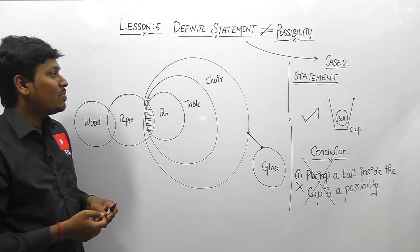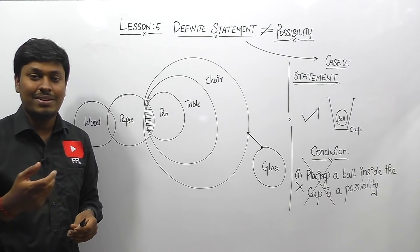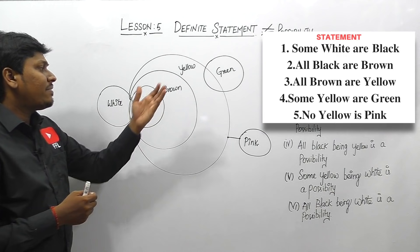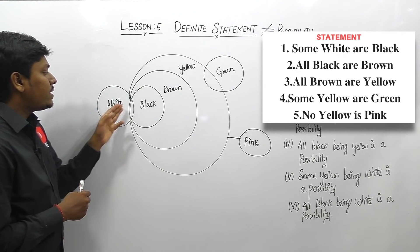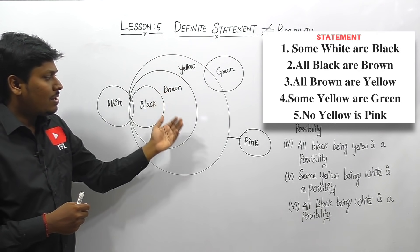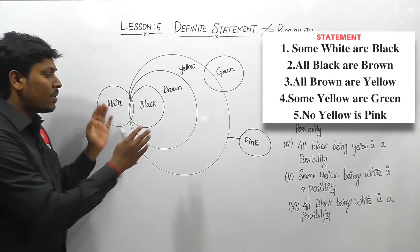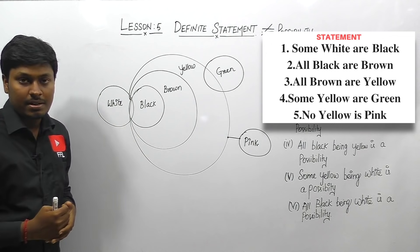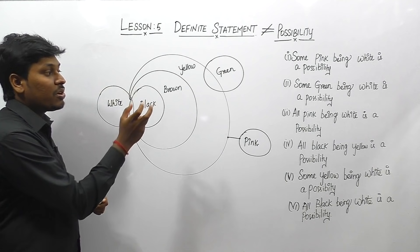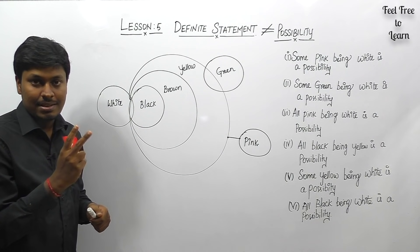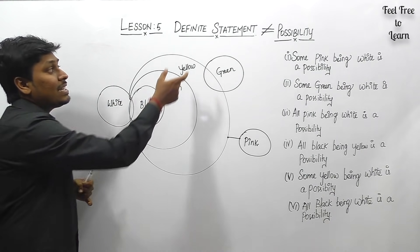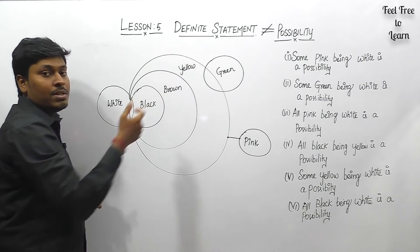Let me now move to a full question with many different conclusions so you can clearly understand the definite statement concept. The given statement is: 'some white are black, all blacks are brown, all brown are yellow, some yellow are green, no yellow is pink.' Assume the Venn diagram has been drawn. Now let us evaluate all the different possibility conclusions.